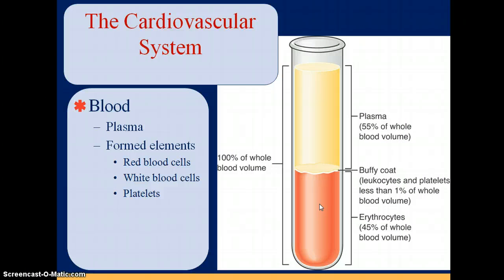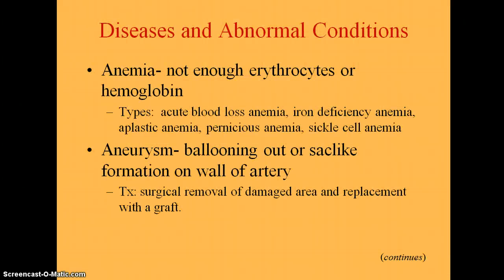Let's talk about some of the diseases of the circulatory or cardiovascular system. The first one is anemia, and this can be from any number of sources, but it's an inadequate number of erythrocytes or hemoglobin. There aren't enough red blood cells, and remember the hemoglobin in the red blood cells carries oxygen to the body and also carries iron.